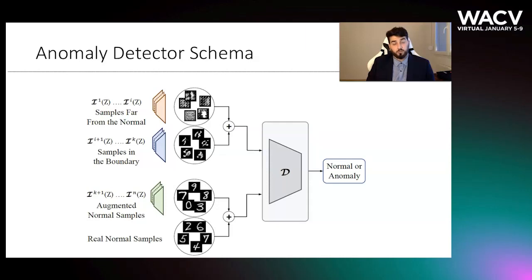Regarding the anomaly detector, the D network is a binary classifier trained on all of the available normal samples and the irregular samples generated by the generator network. Having selected K different models for the network I, and each model can generate M different samples, we obtain M by K samples in addition to normal data.